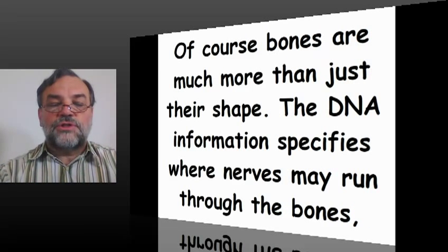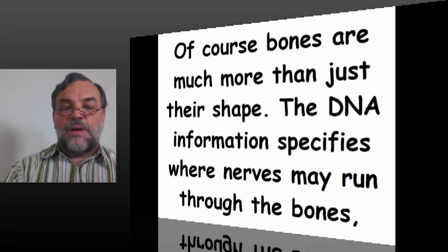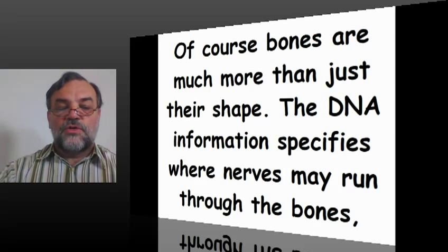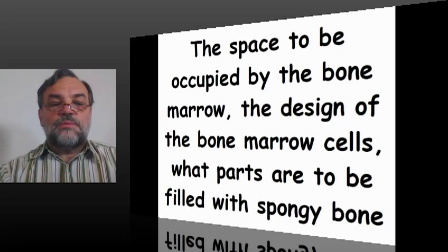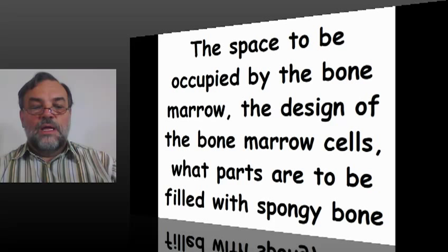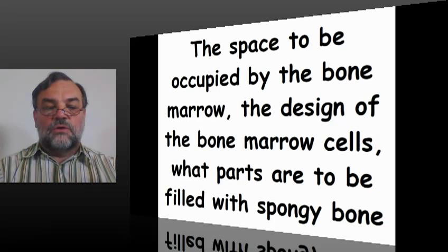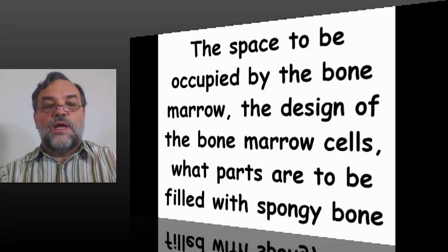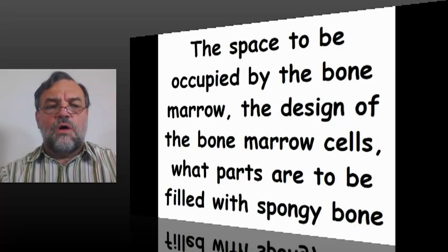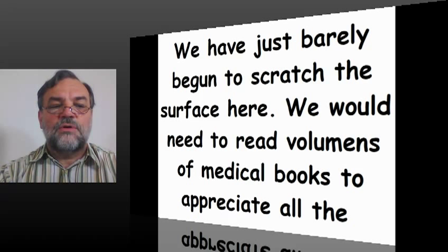Of course, bones are much more than just their shape. The DNA information, aside from specifying the different shapes for more than 200 bones, specifies where nerves run through the bones, the space to be occupied by bone marrow, how to build bone marrow cells, and what parts of the bone are to be filled with spongy bone. All of that information is coded into one single DNA that was copied to all cells — how to make 206 different bones.